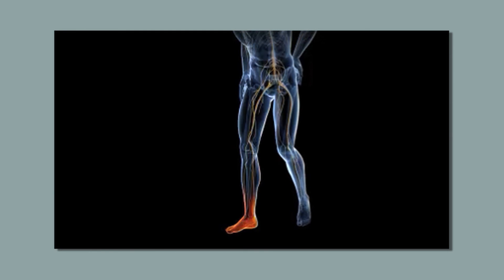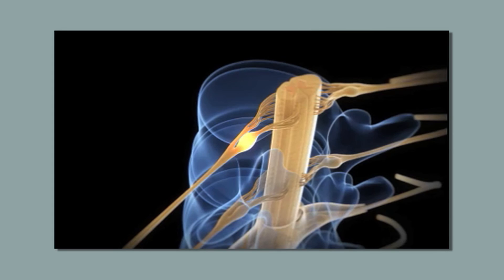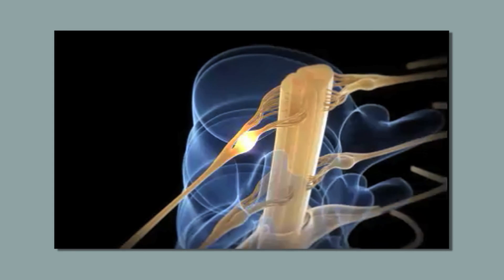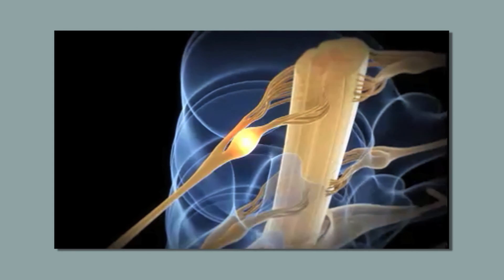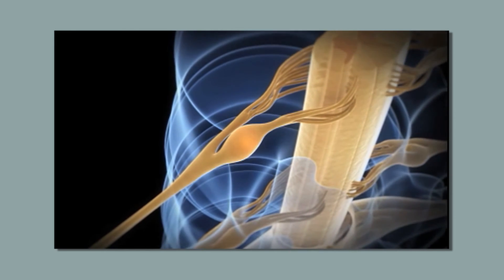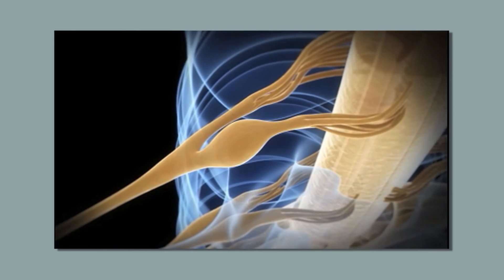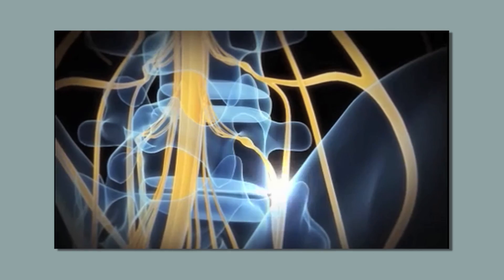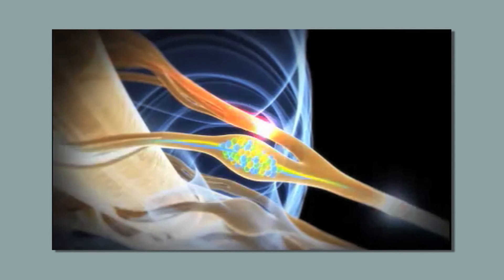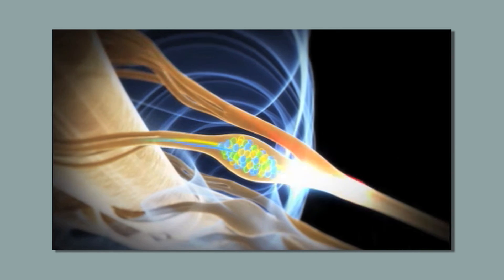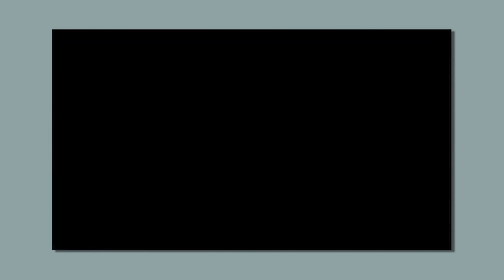The dorsal root ganglion, or DRG, is a sensory neural structure in the epidural space that plays a critical role in the development and maintenance of chronic pain. It contains the primary sensory neurons that transmit sensations, such as pain and touch, from the body to the brain. In chronic pain states, cell bodies in the DRG become hyperexcitable, causing neurons to fire abnormally.